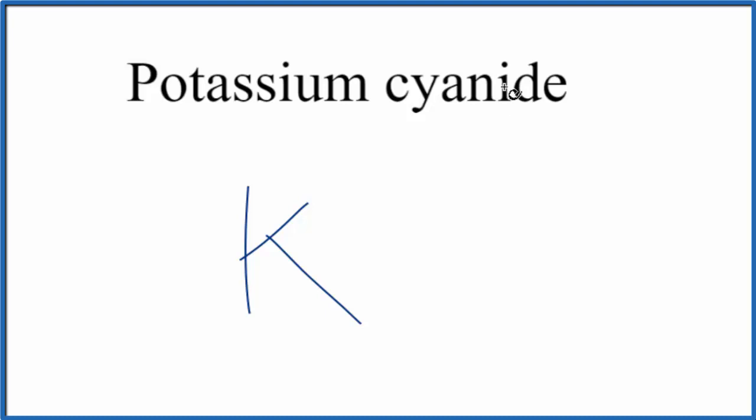look that up on a table of polyatomic ions, or just memorize that cyanide is CN. And cyanide has a 1 minus ionic charge that's on the whole polyatomic ion here. So we have KCN. Potassium, that's